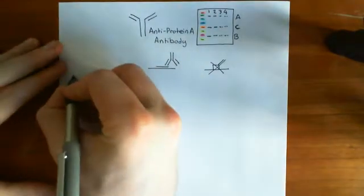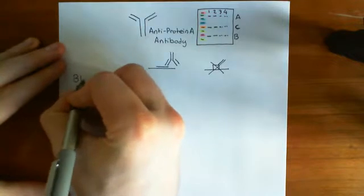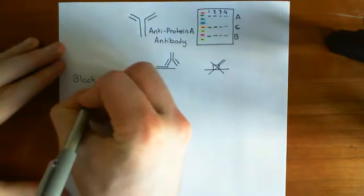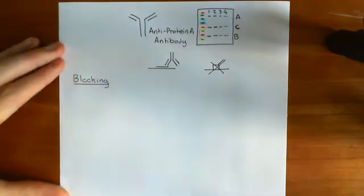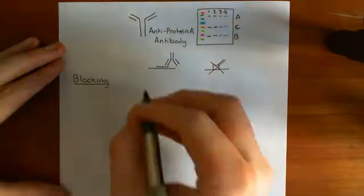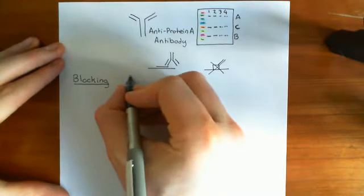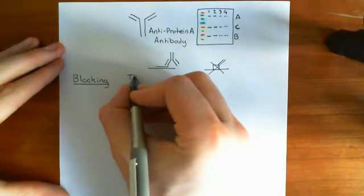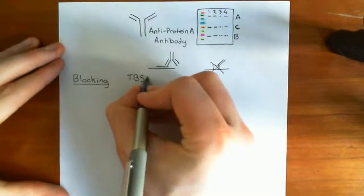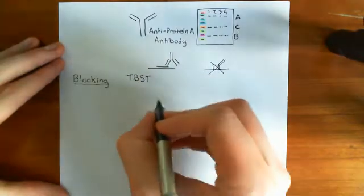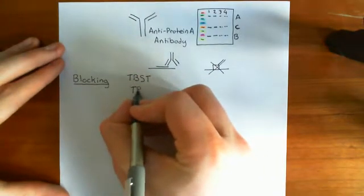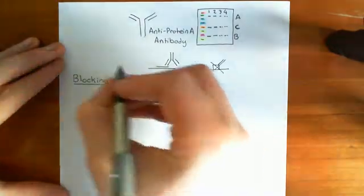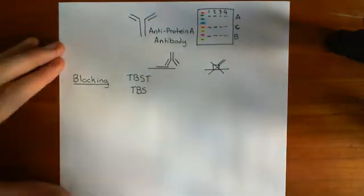So this stage is what's known as blocking. We're going to make up a buffer to do this in, a blocking buffer. And basically, the blocking buffer uses something known as TBST. TBST is based on TBS. So we're going to start off with what is TBS, and then we'll talk about what TBST is, and then we'll talk about making our blocking buffer.